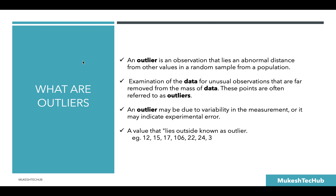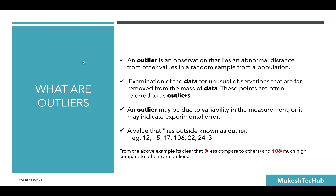For example: 12, 15, 17, 106, 22, 24, and 3. In this range, 3 is the lowest and 106 is much higher than the rest. These could be the outliers. From this example, it's clear that 3 is less compared to the others and 106 is much higher — so these two numbers, 106 and 3, are known as outliers.